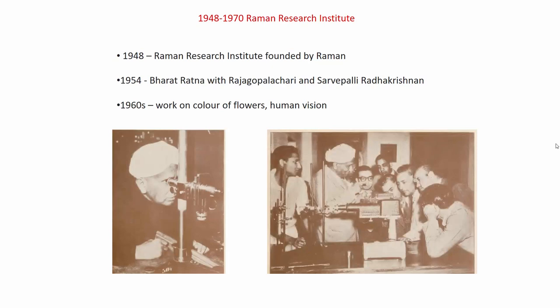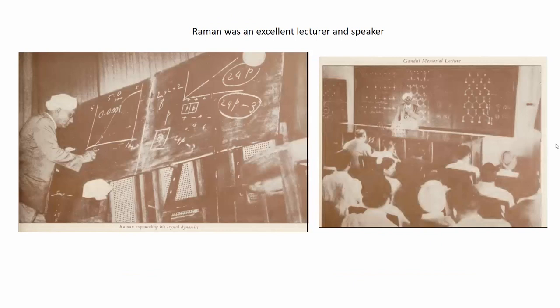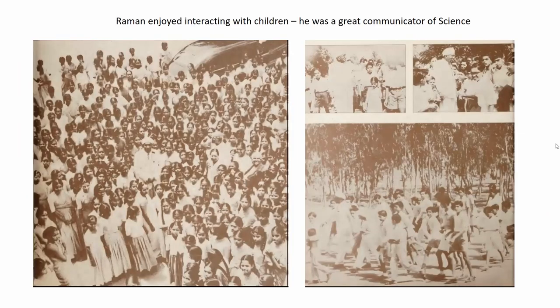Raman was a very keen experimentalist who was enthusiastic about showing his work to others. He always encouraged questions and had very nice interactions. He was also an excellent lecturer and speaker. Here, towards the left, you can see him giving a talk on crystal dynamics — you can probably see the dispersion relationship drawn on the board. The most important thing about Raman is that he enjoyed interacting with children. He was an excellent communicator of science and really seemed to enjoy extensively interacting with children, arousing their interest. Many people from that generation have said they got really inspired to do science because of their interaction with Raman.